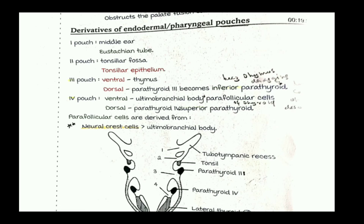From the fourth pouch: the ventral part forms the ultimobranchial body, which gives rise to the parafollicular cells of the thyroid, and the dorsal part forms parathyroid four, which becomes the superior parathyroid. It is important to note that the superior parathyroid is formed from the fourth pouch, while the inferior parathyroid is formed from the third pouch. If asked about parafollicular cells, priority should be given to neural crest cells if that option is available, over the ultimobranchial body.